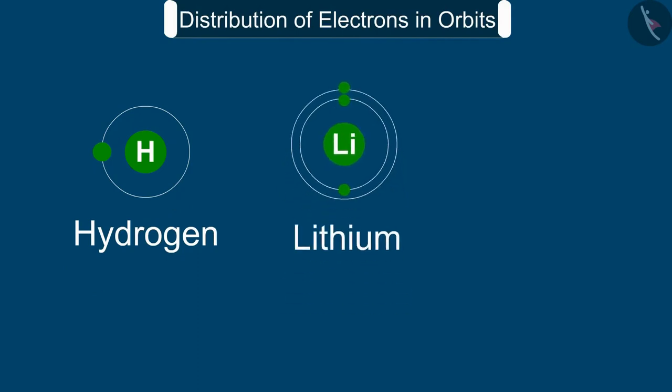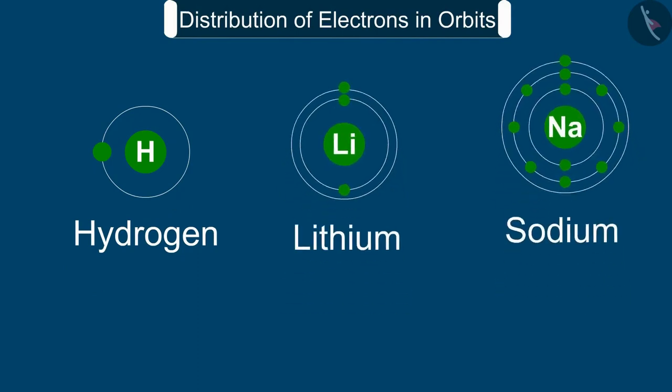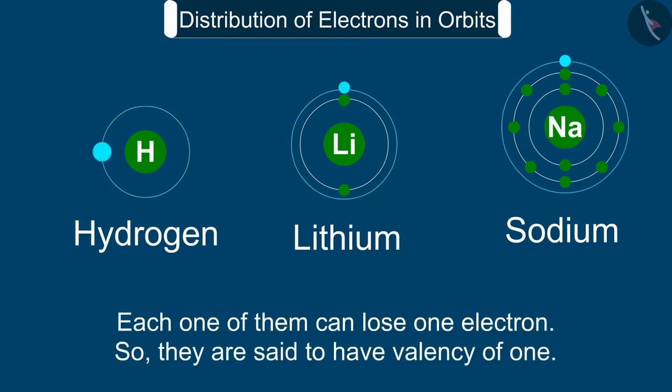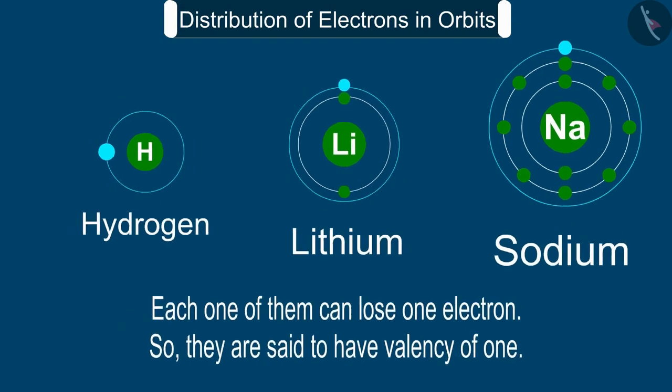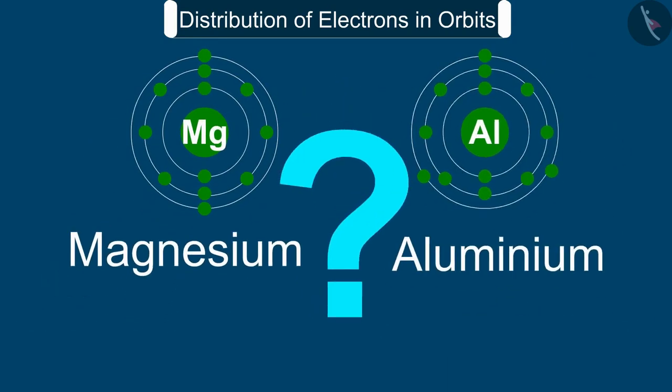Hydrogen, lithium, and sodium atoms contain 1 electron each in their outermost shell. Therefore, each one of them can lose 1 electron. So, they are said to have a valency of 1.